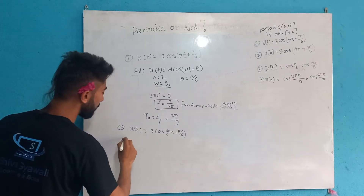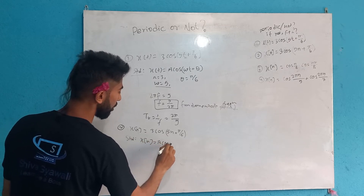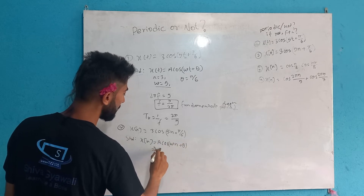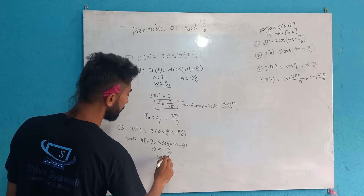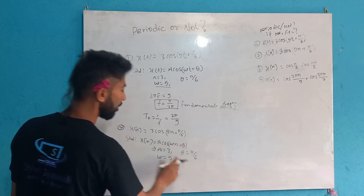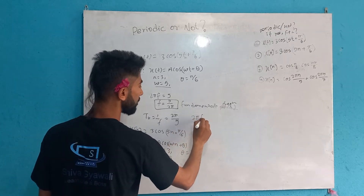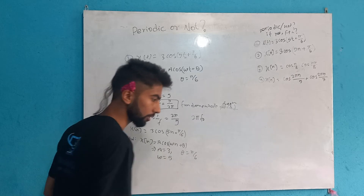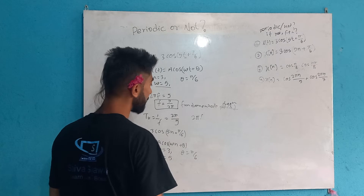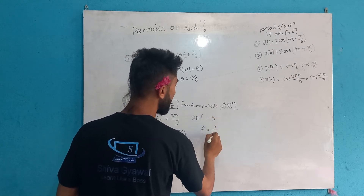For the discrete-time case, compare the standard equation x[n] = A·cos(ω₀n + θ). Here A = 3, ω₀ = 5, θ = 5π/6. For discrete-time signals, we check if ω₀/(2π) = 5/(2π) is a rational number. If f₁ = 5/(2π), we check rationality.